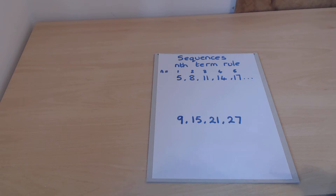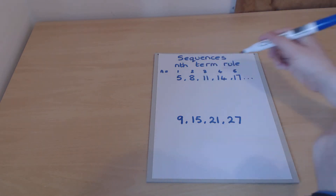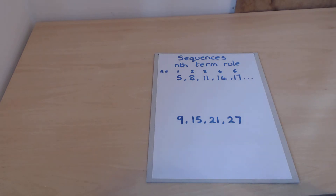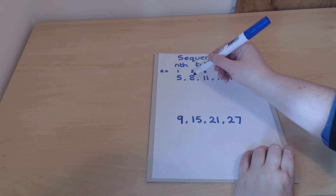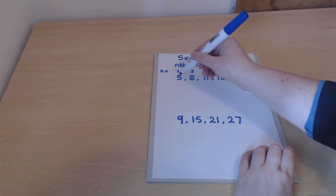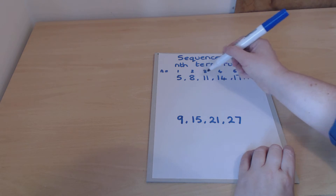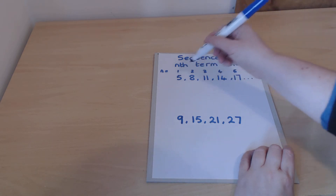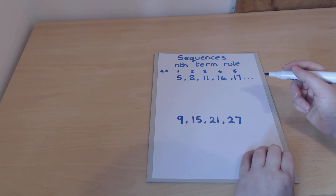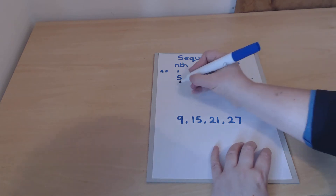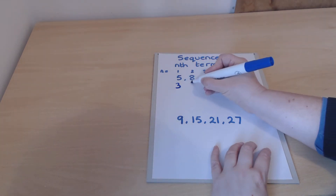All of these sequences are actually times tables which have been knocked a bit out of sync. In order to work out which times table we're dealing with, we work out the difference between the numbers. So 8 take away 5 is 3, 11 take away 8 is 3, 14 take away 11 is 3. Each one differs by plus 3, which means we're actually dealing with our 3 times table.